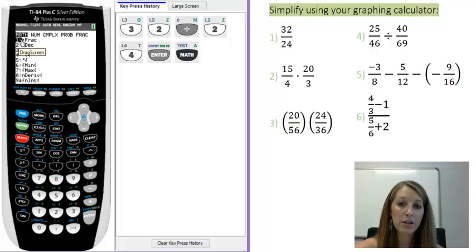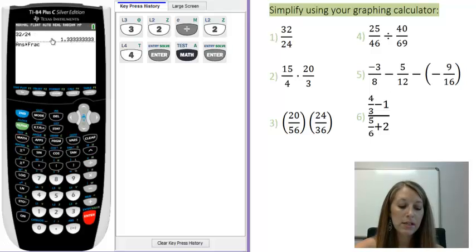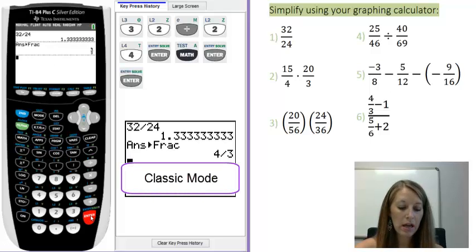And it converts. This arrow here means it's going to convert whatever you last took and convert it into a fraction. So you can either hit the option one, or since one is already highlighted, you can hit the enter. Now, since I did this and I already hit enter, it's going to take my last answer, which is this 1.3 repeating, and convert it into a fraction. Hit enter again, and we can see that the fraction format of this here is 4 thirds.